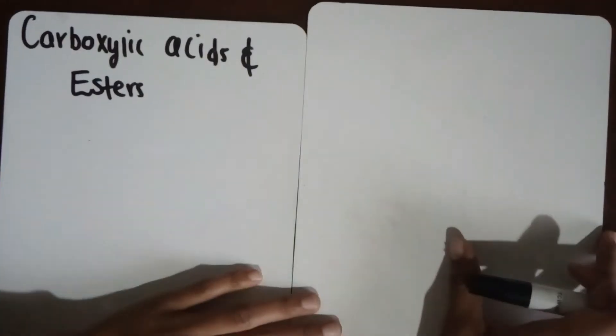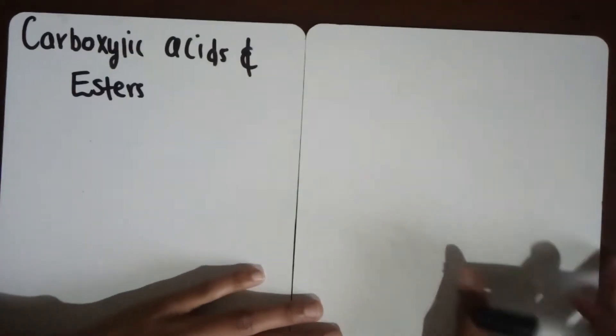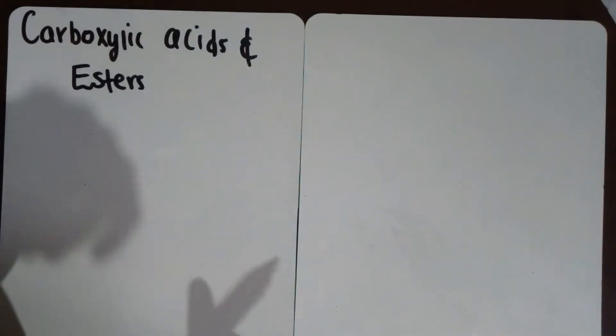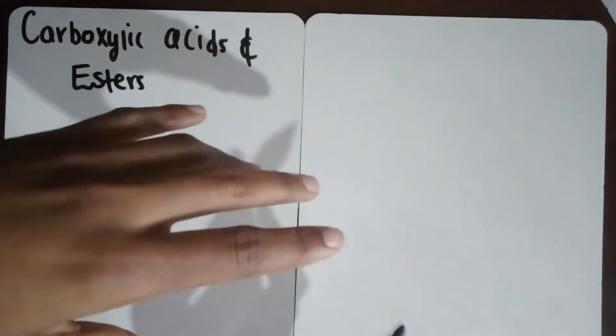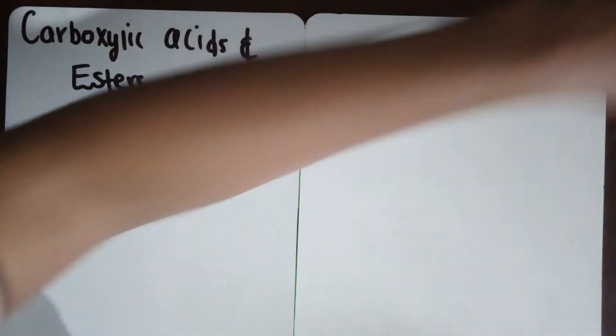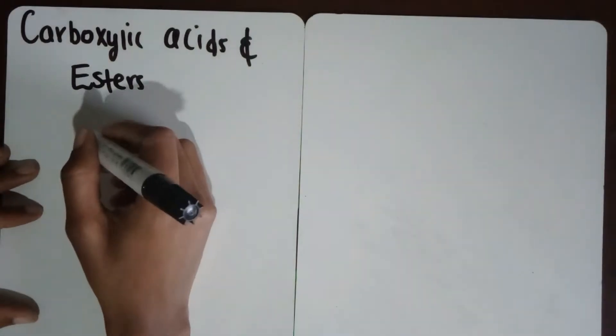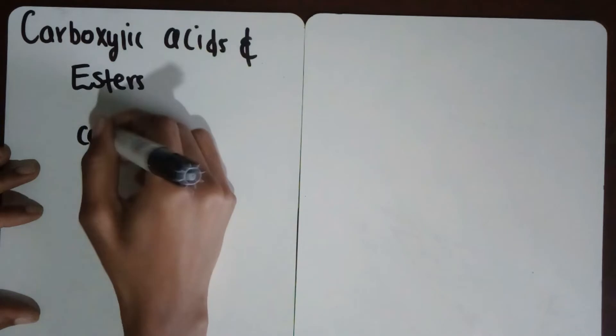We're talking about organic molecules, and our discussion today is going to be on carboxylic acids as well as esters. As with everything, the first thing we have to do is define what carboxylic acids are, as well as what esters are. How do we identify carboxylic acids? These are compounds with a functional group called a carboxyl group.